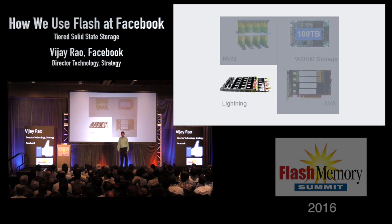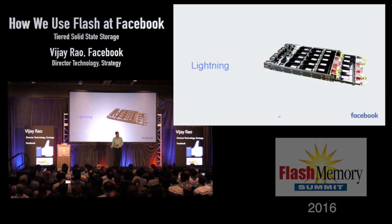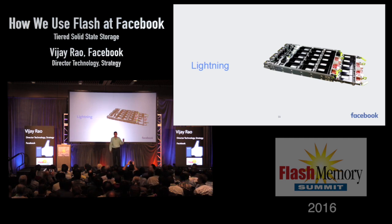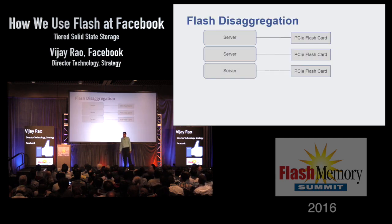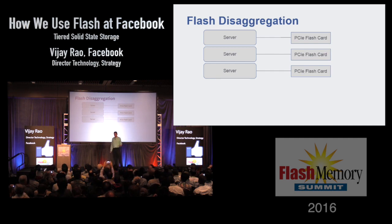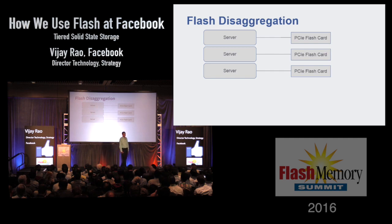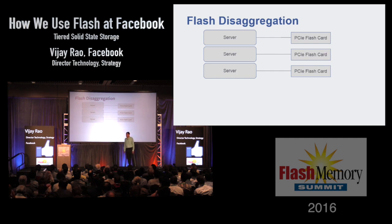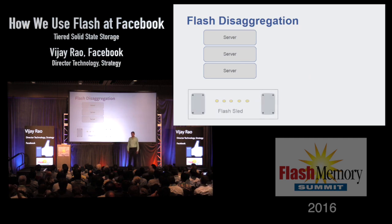Let's look at Lightning first. It's our JBOF — that stands for Just a Bunch of Flash. We contributed this design to OCP, and we're very excited to see a number of our partners contributing to and making enhancements to this design. It has 30 slots for Flash-based media, and it's versatile — it accepts PCI-based Flash in SSD and M.2 form factors. Aggregating Flash is a step towards our hierarchical storage. A number of our services have Flash directly attached to servers, which forces Flash and compute to scale together. We designed Lightning to share Flash across multiple servers, allowing each resource to scale independently.